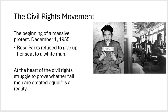Rosa Parks was arrested for refusing. This is her mugshot, her arrest, and this is a picture taken years later to commemorate what she had done. At the heart of what Rosa Parks was doing, and at the heart of all this civil rights struggle, is: are all men — and we're talking humanity, men, women, children — are they created equal? Is that a reality? That is the heart of what the civil rights movement is all about.